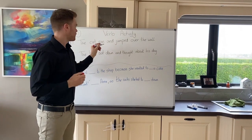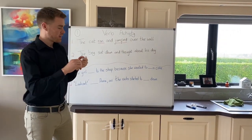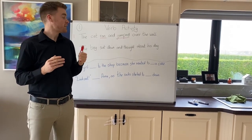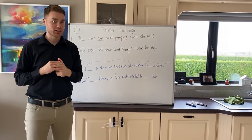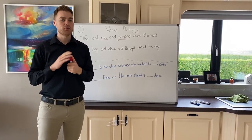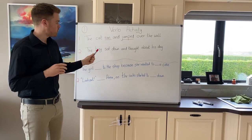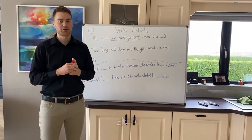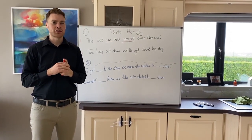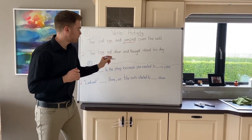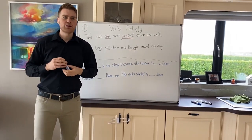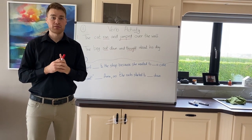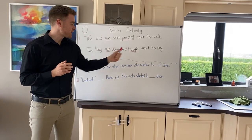Let's look at the first sentence. The cat is the subject — the sentence is: 'The cat ran and jumped over the wall.' A verb is a doing word, so what is the cat doing? Hopefully the class will tell me that 'ran' and 'jumped' are the two verbs. We can also look at what tense they're in — they're in the past tense. In the present tense it would be 'the cat runs and jumps.' For example two: 'The boy sat down and thought about his day.' What are the verbs? The boy is the subject — 'sat' and 'thought.' The boy is quite still yet he's still doing things, so it's important to remember verbs are not just active.